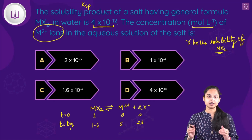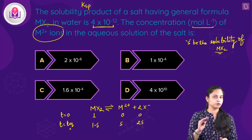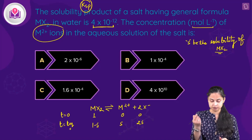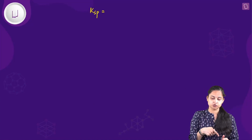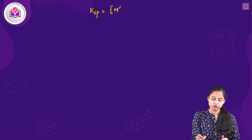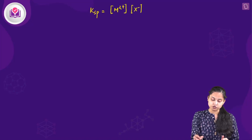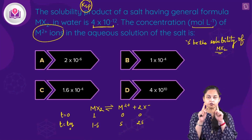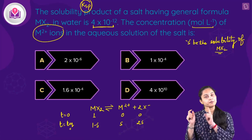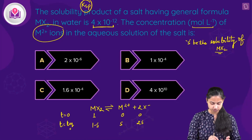Now I want to find the concentration of M²⁺, and I've been given the Ksp value. The solubility product expression for MX₂ dissociation is: Ksp = [M²⁺] × [X⁻]², where [X⁻] is raised to its stoichiometric coefficient of 2.